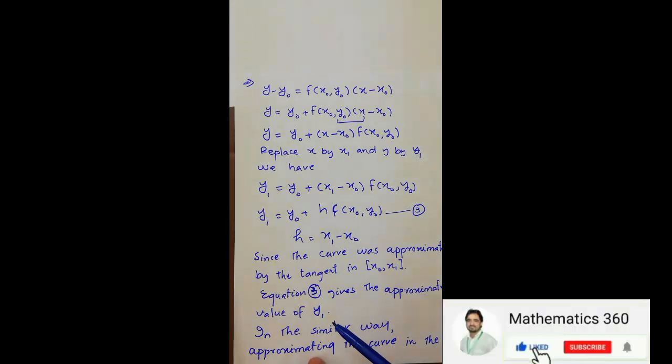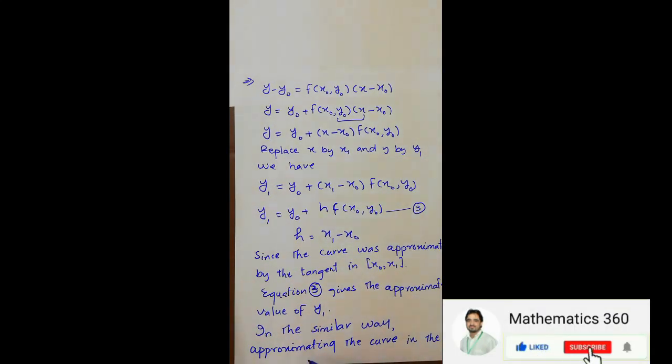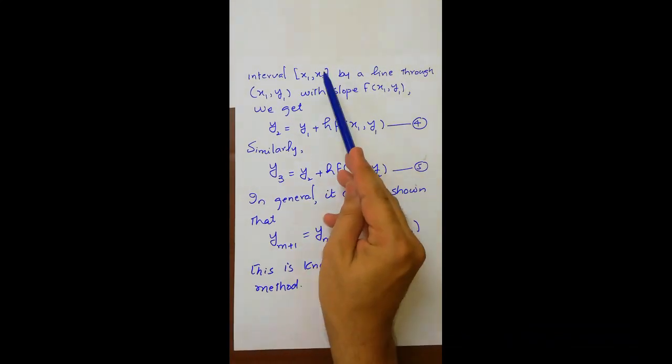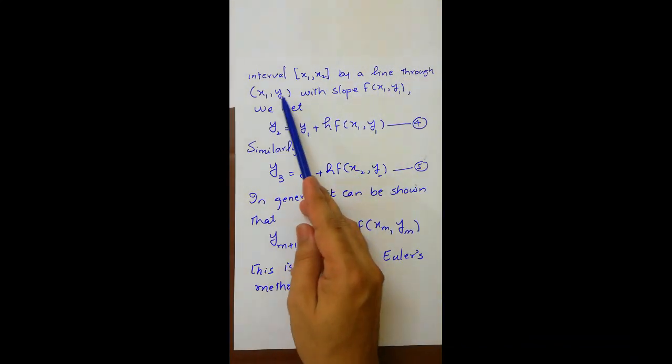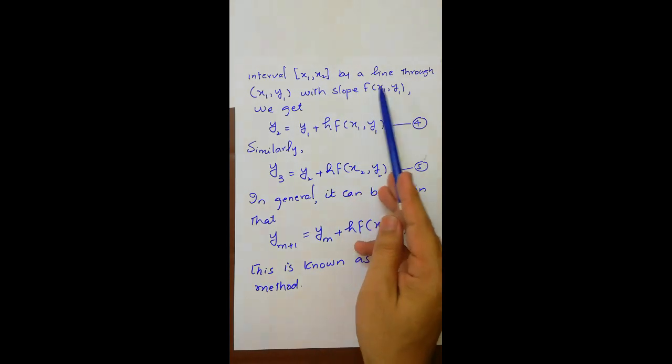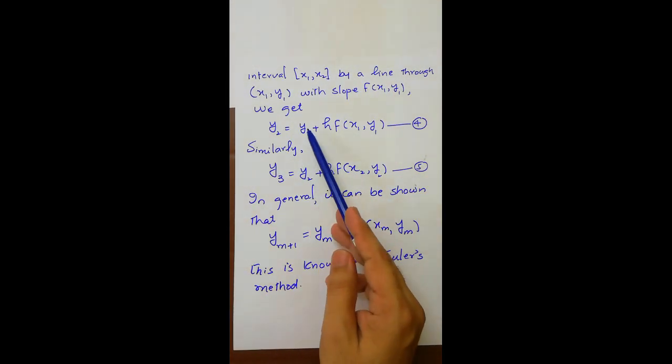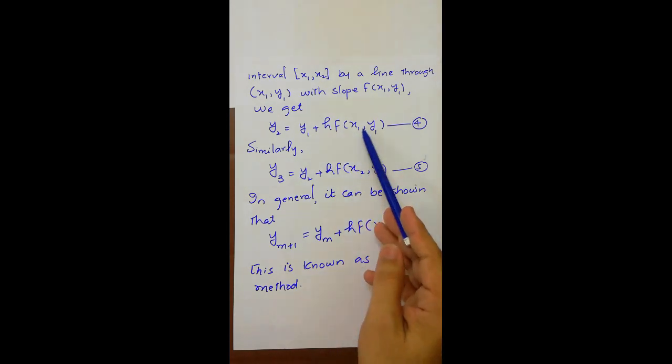In the similar way, approximating the curve in the second interval x1 x2 by a line through x1 y1 with slope f of x1 y1, we get y2 equals y1 plus h f of x1 y1.